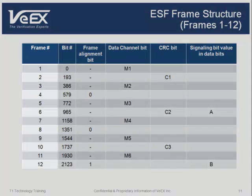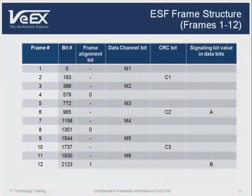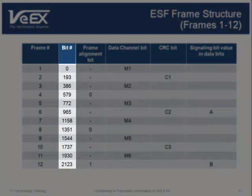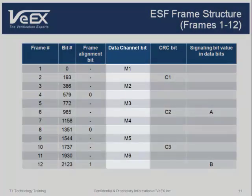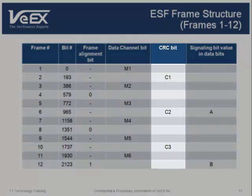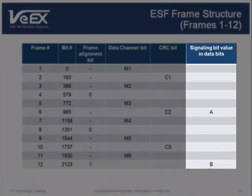This shows the first 12 frames of an ESF frame structure. As in T1 framing and as with a superframe, the ESF is comprised of 193-bit frames. Every fourth frame begins with a frame alignment signal. Every other frame begins with a data channel bit. The remaining frames begin with a CRC bit. There are also a total of four robbed bits, two in the first 12 frames of the ESF's structure.